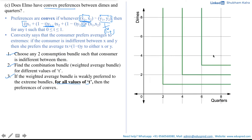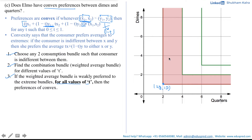If you recall from previous parts of this question, we drew these indifference curves for Elmo and saw that the shaded area on the graph consists of all combinations of quarters and dimes that Elmo thinks are just indifferent to having two quarters and one dime. On the x-axis we have quarters and on the y-axis we have dimes. This shaded region inclusive of the red indifference curve is known as the indifference band.